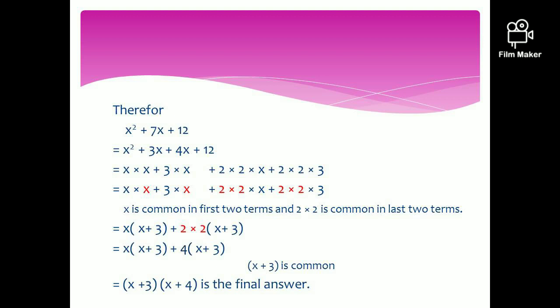Take x out from the first two terms — giving the bracket x plus 3 — and take 4 out from the next two terms — giving x plus 3 again. Therefore, x plus 3 becomes common. Take x plus 3 out, and the final answer is x plus 3 times x plus 4. Hope you have understood this theory.